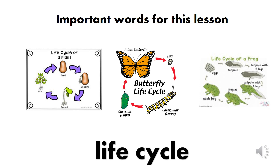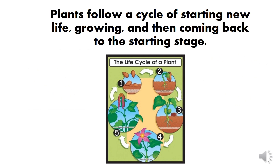The other important word for this lesson is life cycle. Now you say life cycle. We have learned about different kinds of life cycles. We learned about the life cycle of a butterfly, the life cycle of a frog, and now we are learning about the life cycle of a plant. Plants follow a cycle of starting new life, growing, and then coming back to the starting stage.